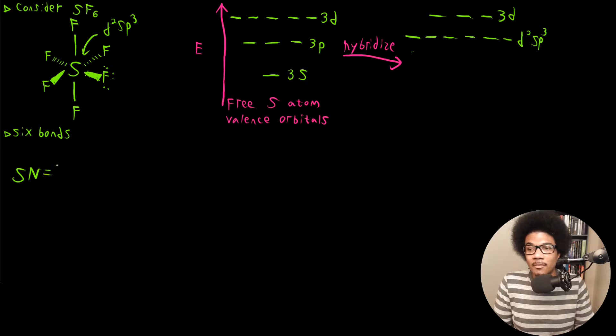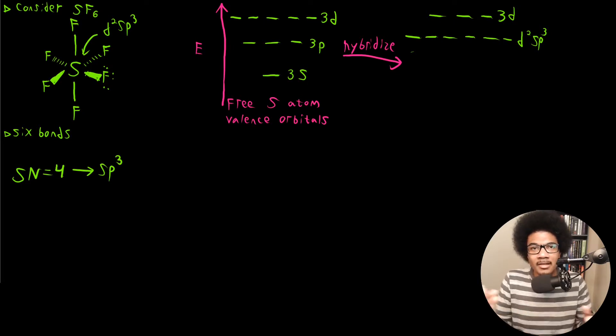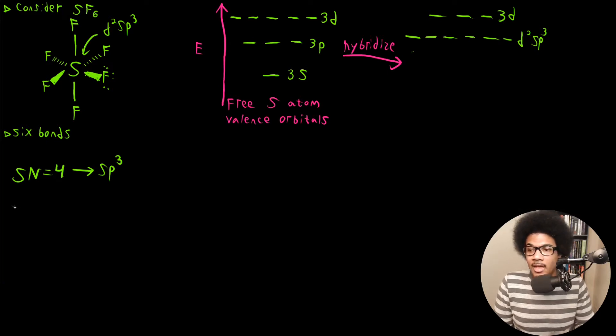If you have a steric number of four, that's going to be SP3 hybridized. So any central atom that has a total steric number of four is going to employ SP3 hybrid orbitals. If you have a steric number of three, that's going to be SP2 hybrid orbitals. If you have a steric number of two, that's going to be SP hybrid orbitals.